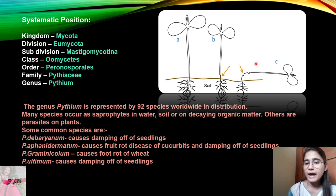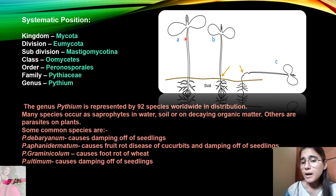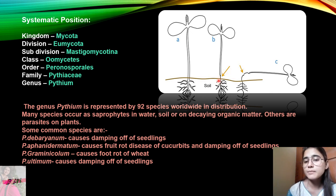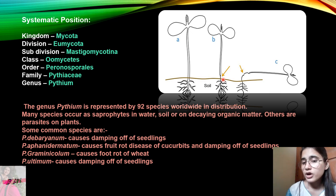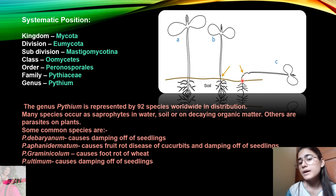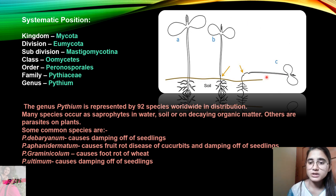Pythium debrianum causes damping off of seedlings — this is very important to remember. We can commonly see this in tomato seedlings that do not grow properly. In this photograph you can see an example of damping off of seedlings. In normal conditions a plant should develop properly, but when Pythium infection occurs the shoots become constricted and eventually die. This is what we call damping off of seedlings caused by Pythium fungus.